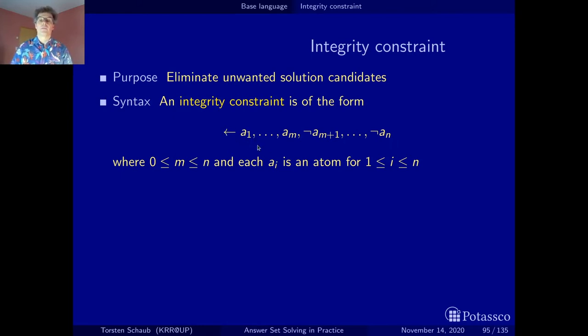the idea is whenever this body here is satisfied, this implies a contradiction and the current solution candidate is invalid. That's more or less the idea.